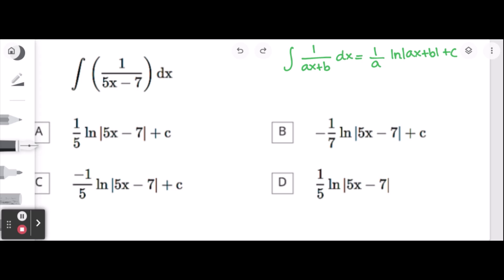Indefinite integral of 1 over 5x minus 7 dx. How to solve this? We need to follow the rule again.